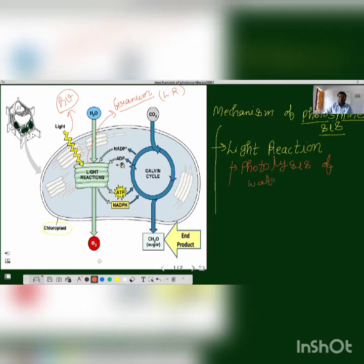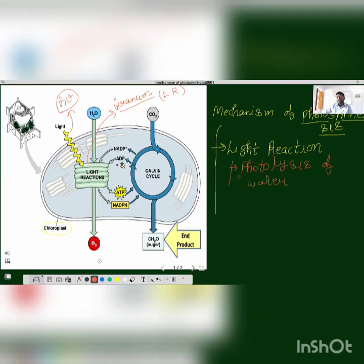Water is taken by plants through root hairs from the soil and enters the chloroplast. This light energy is responsible for the breaking of water. The word 'photolysis' comes from 'photo' meaning light and 'lysis' meaning breaking. So in the presence of light, we have the breaking of water — that process is called photolysis.